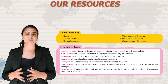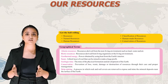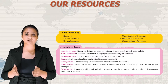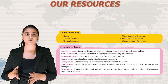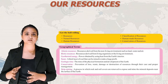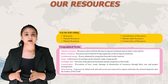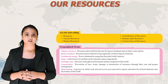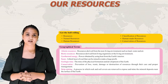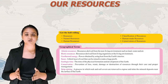Third is geothermal energy. Power obtained by using heat from the earth's interior is known as geothermal energy. Fourth is seam — a thick layer of coal that can be mined to make a huge profit is known as a seam. Fifth is geological time — the time of the physical formation and development of the earth.